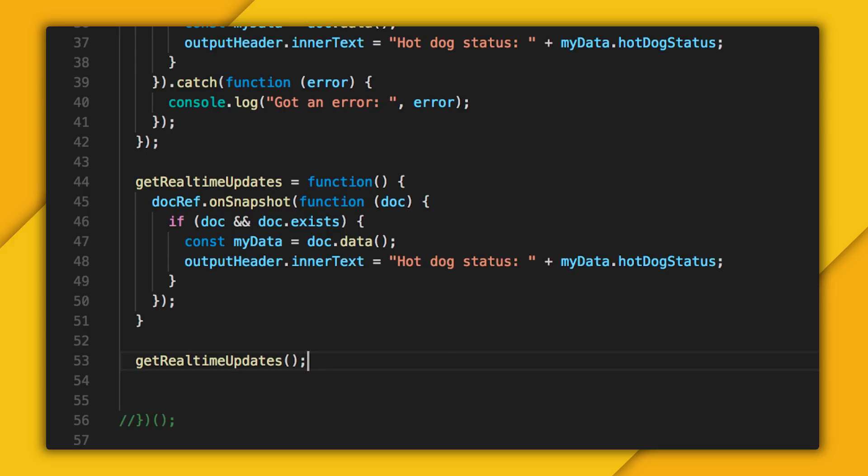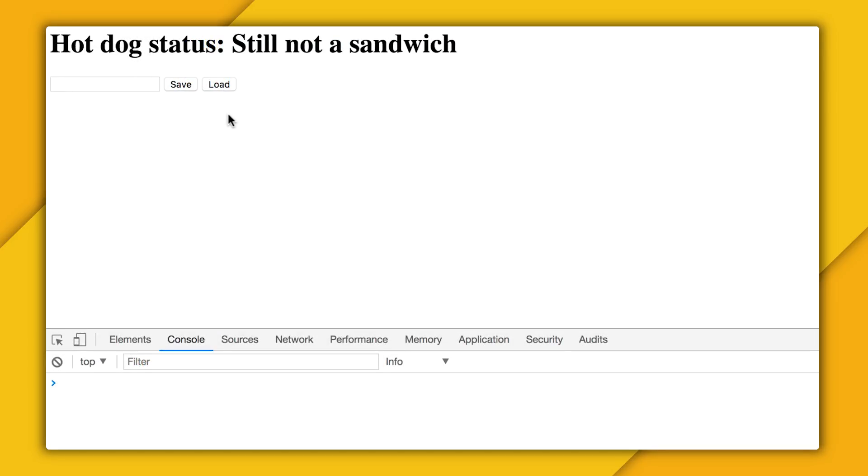Here, let's reload the page. Now you can see that, thanks to my on snapshot listener, my text automatically gets updated with still not a sandwich, the value that was in the cloud previously. So let me change my status to potentially a sandwich. I'll hit save. And you can see that my label gets updated automatically without my having to even touch that load button. Neat.